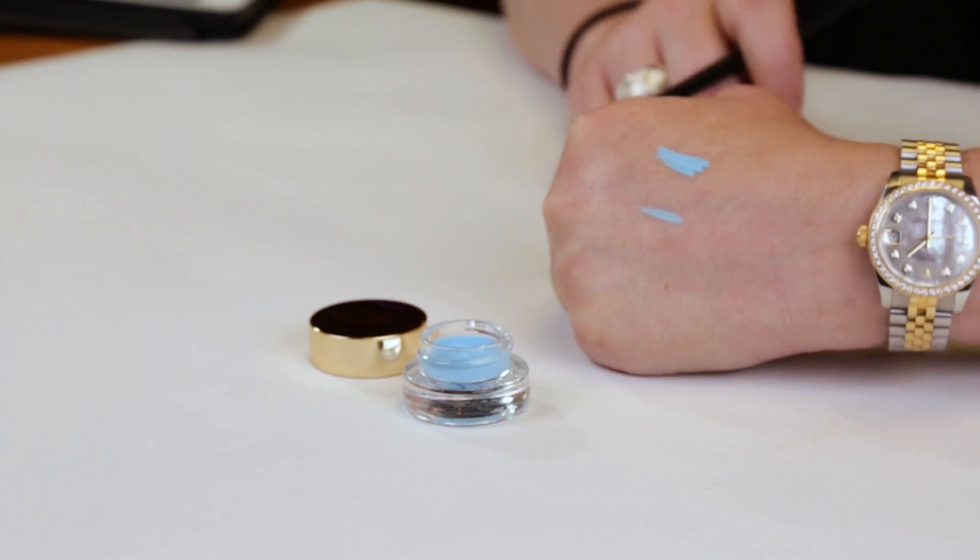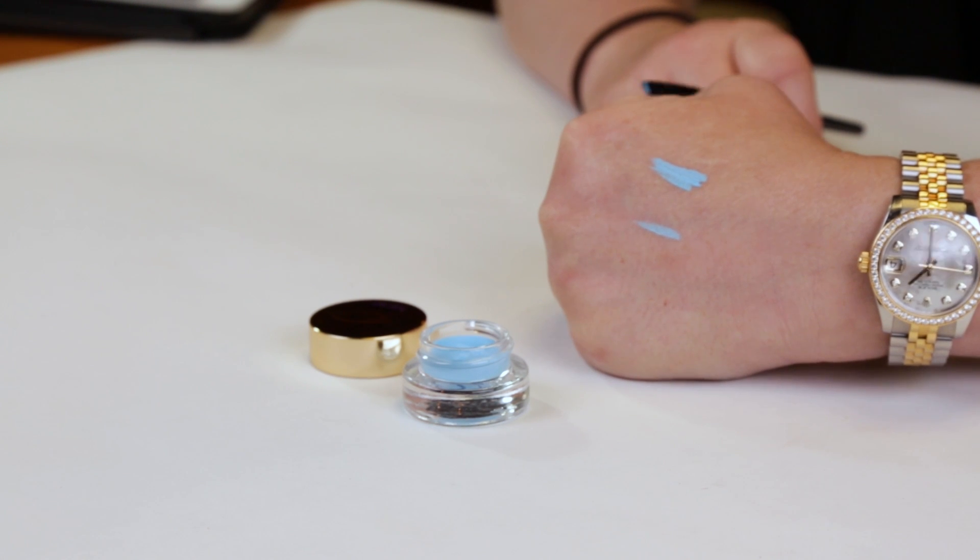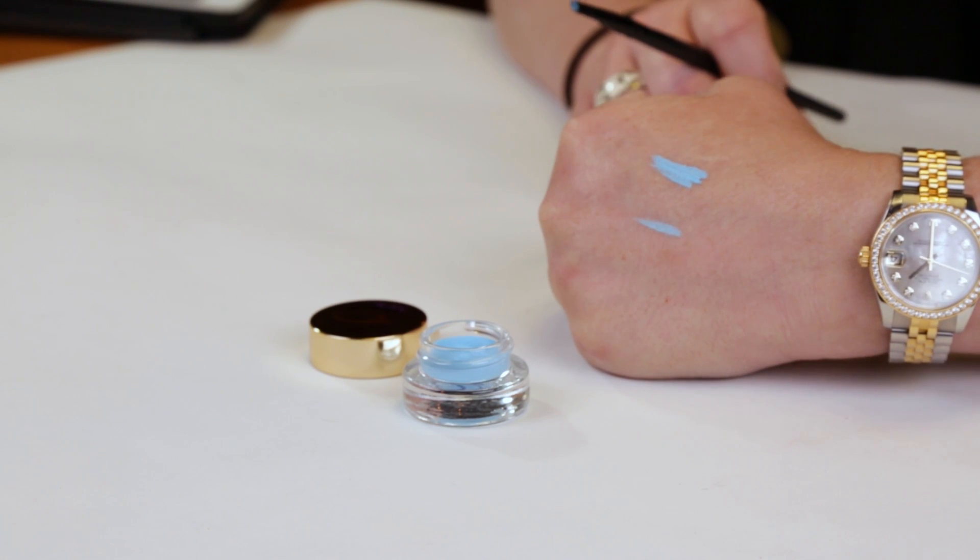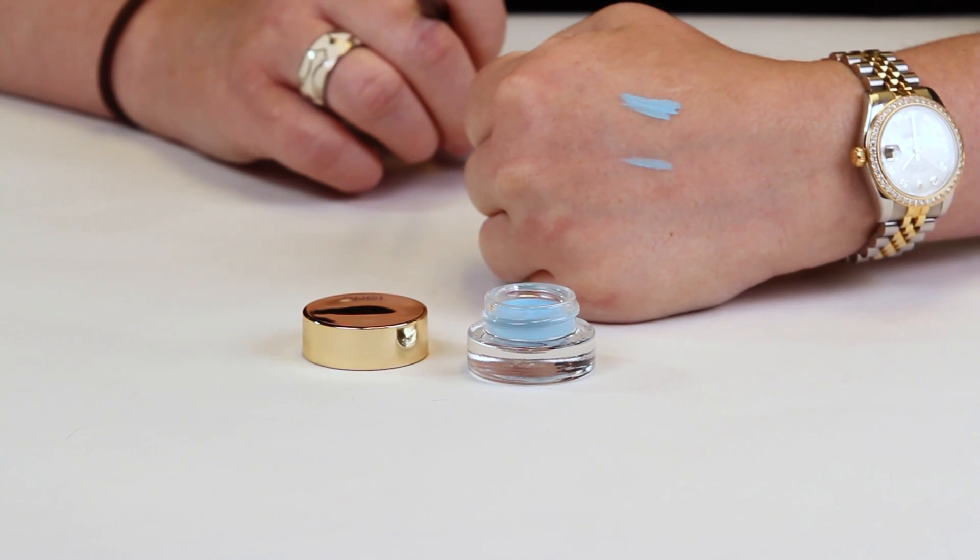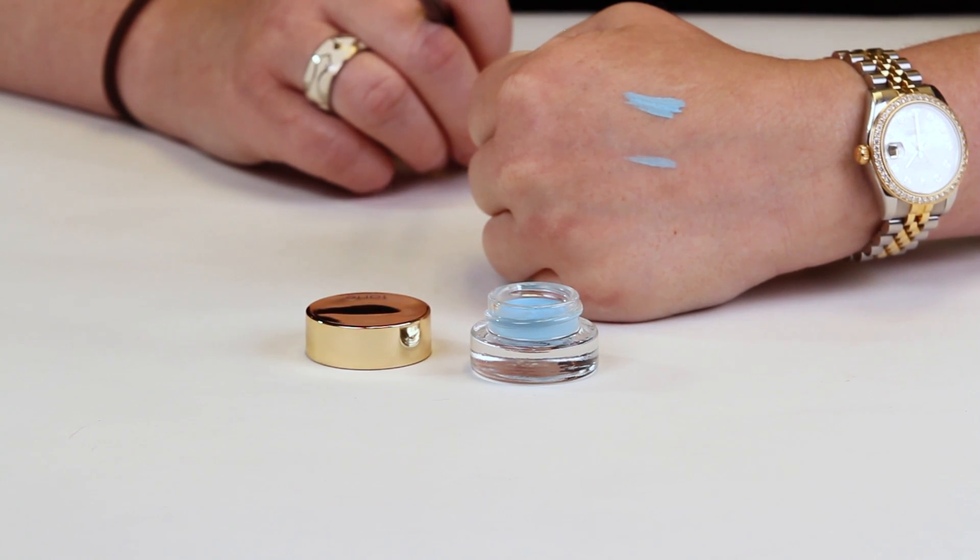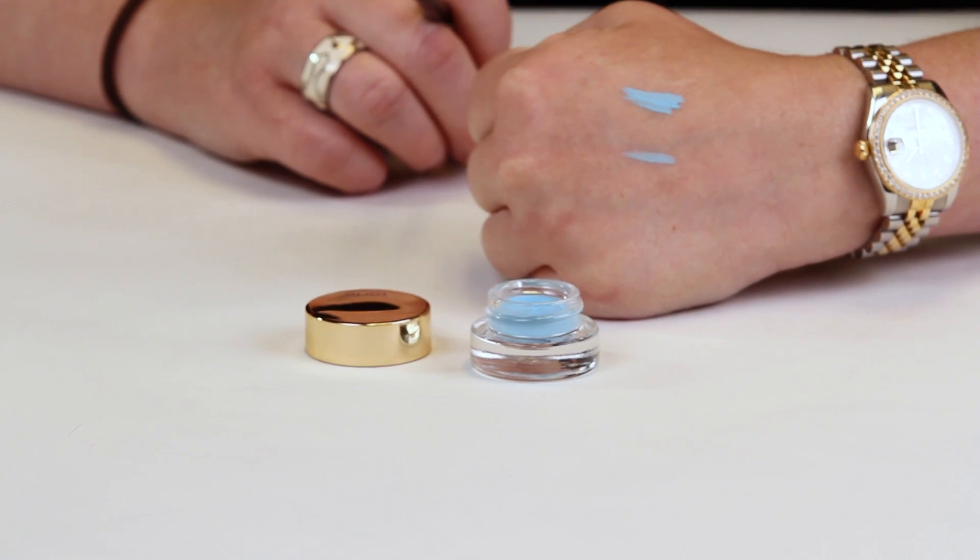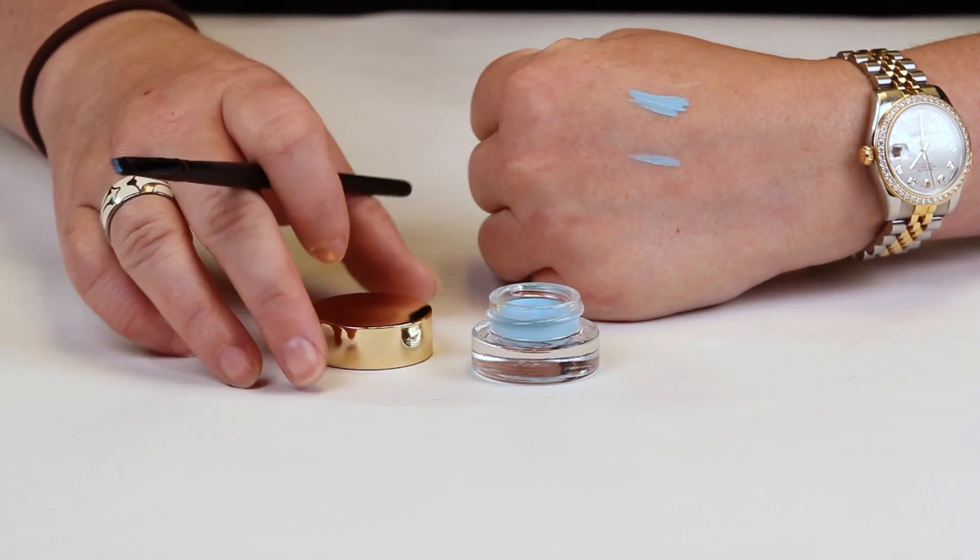Some of the make-believe colors are fun and bold. They've got a purple, a lime green, a blue, an orange, a silver, and of course their standard colors like browns and black and things like that. So it's definitely a good liner.